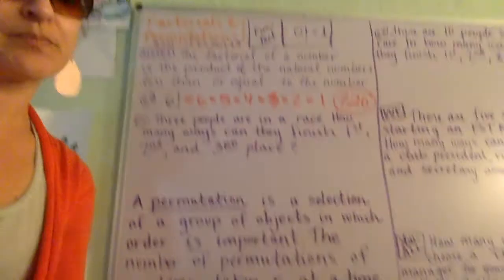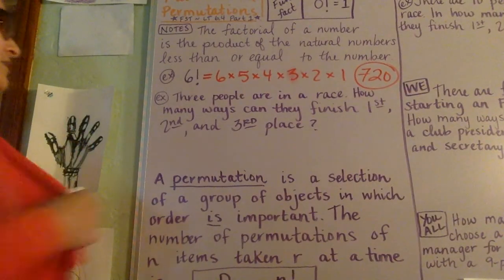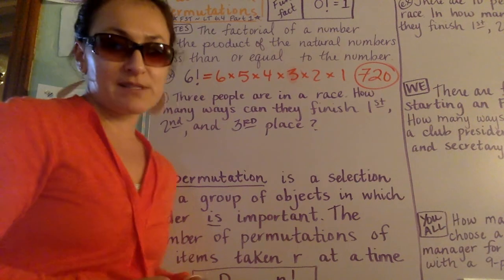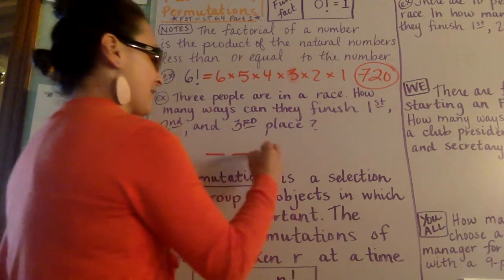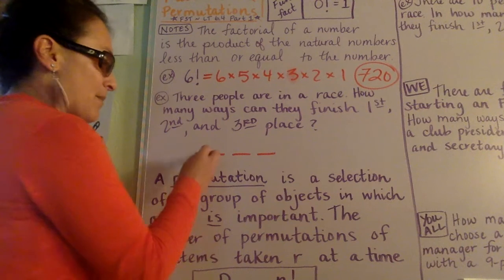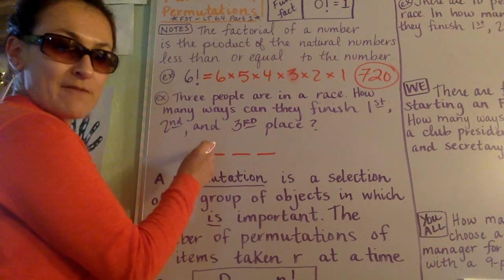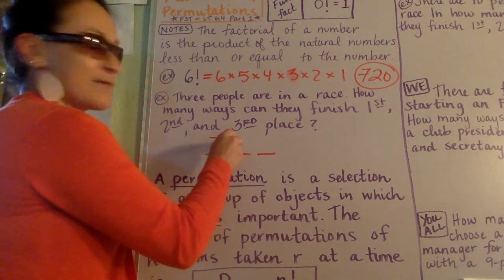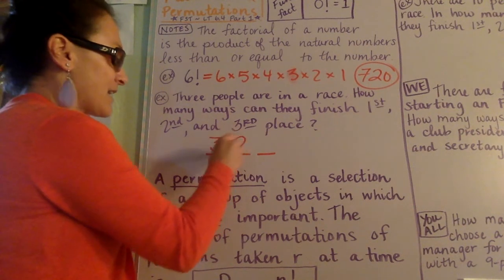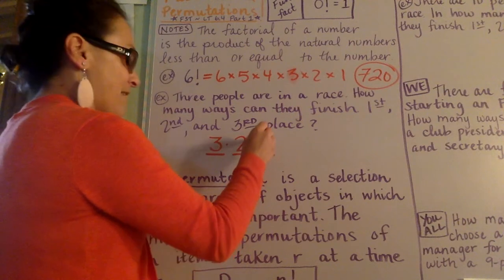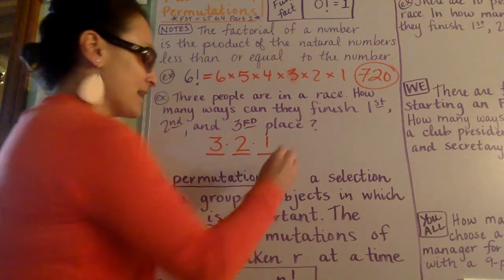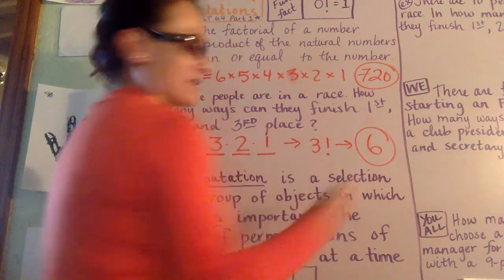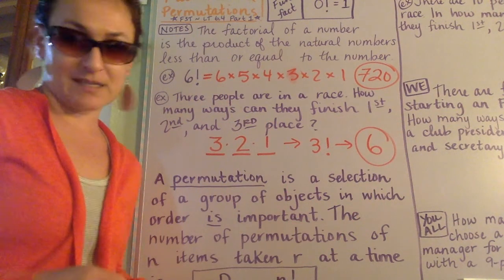Let's take a look at an example. Three people are in a race. How many ways can they finish 1st, 2nd, and 3rd? So we have 3 finishers. How many choices did we have for 1st place? We had 3. So someone finishes there. That leaves how many choices for 2nd? And then how many choices for 3rd place? We have 1. In other words, the answer to this problem is 3 factorial. The answer to this problem is 6.